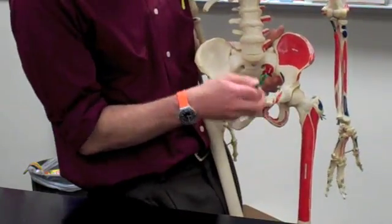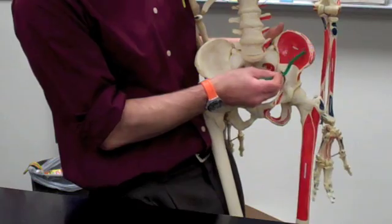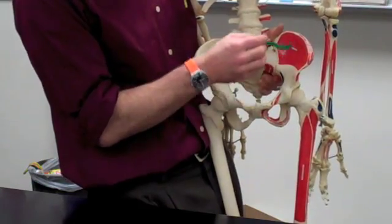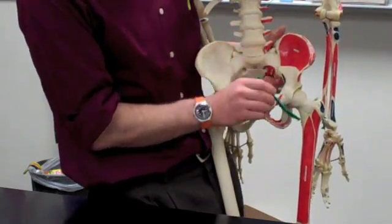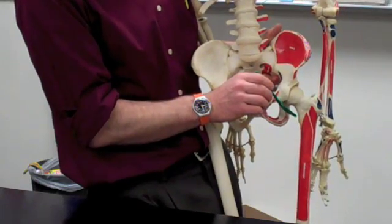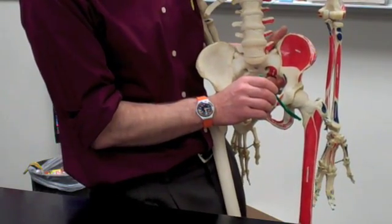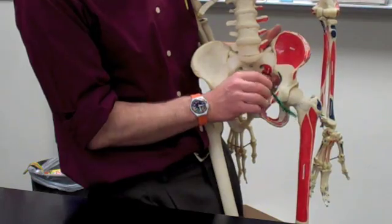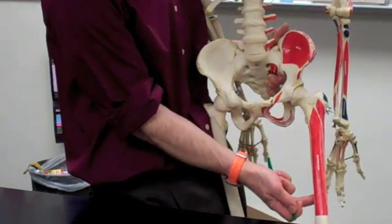The second muscle in that group is the iliacus muscle and that starts in the iliac fossa. And again, it goes underneath the inguinal ligament and also attaches into the lesser tubercle of the femur. Also, contracting to raise the thigh.